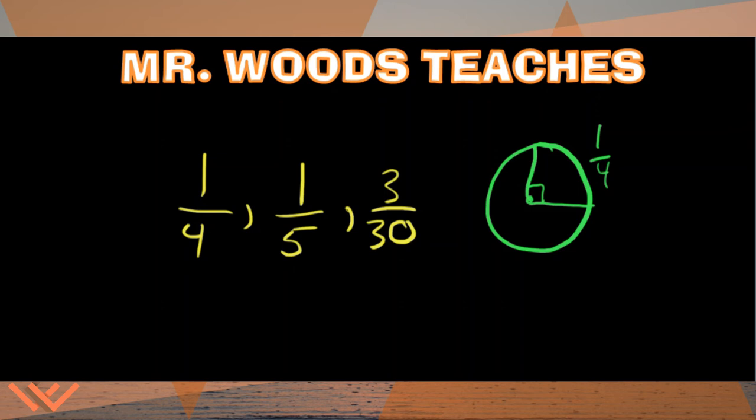One fifth is, that would be five pieces, not four pieces, going around this circle. So it would probably be a little bit less than one quarter. So there's one fifth.